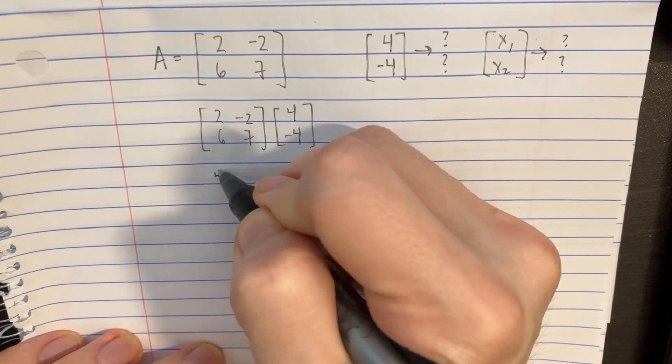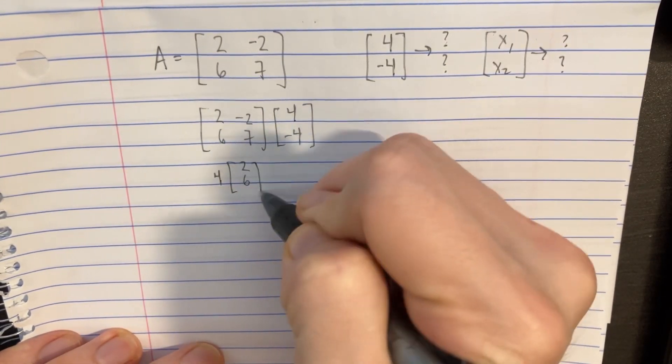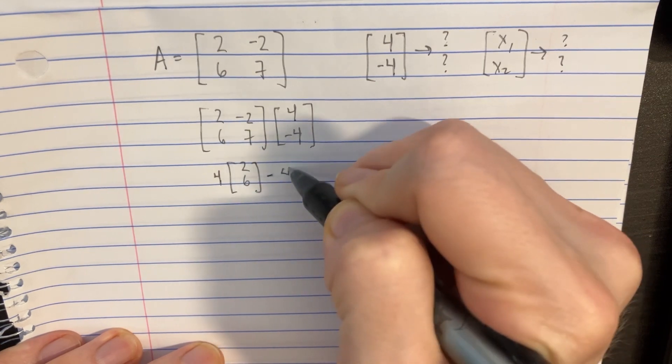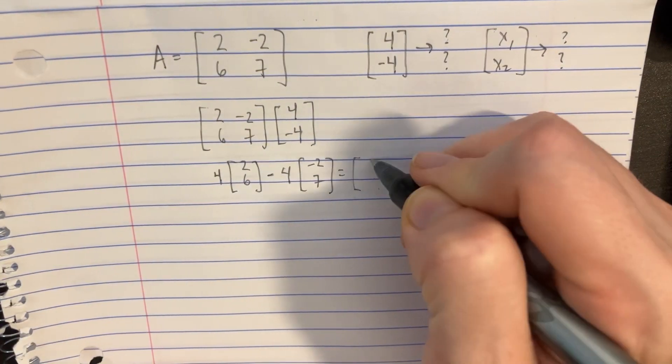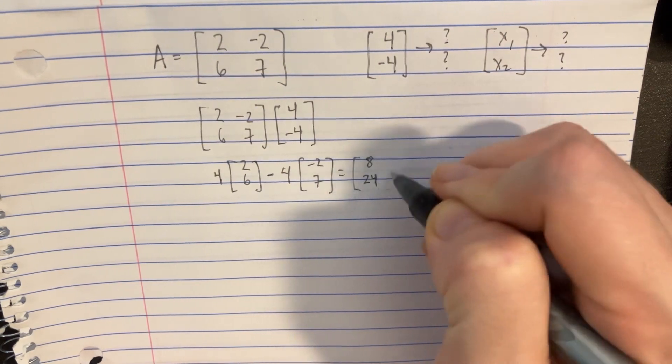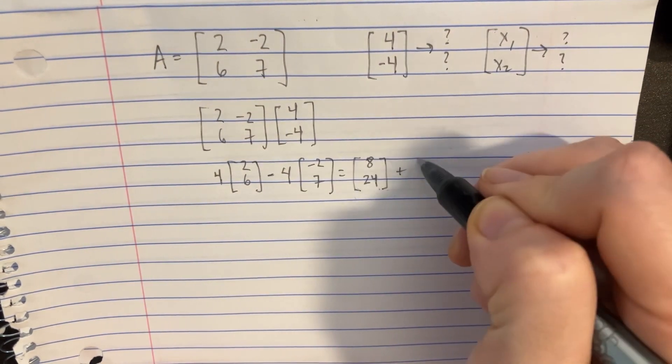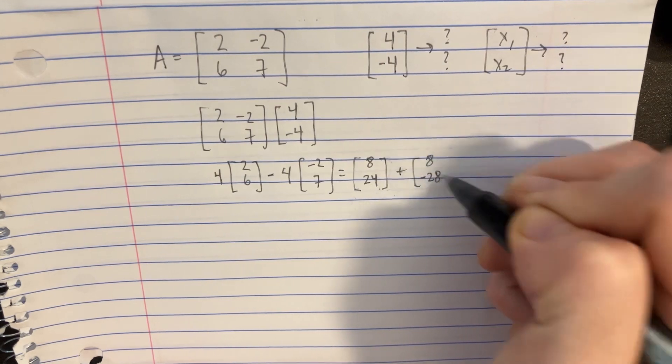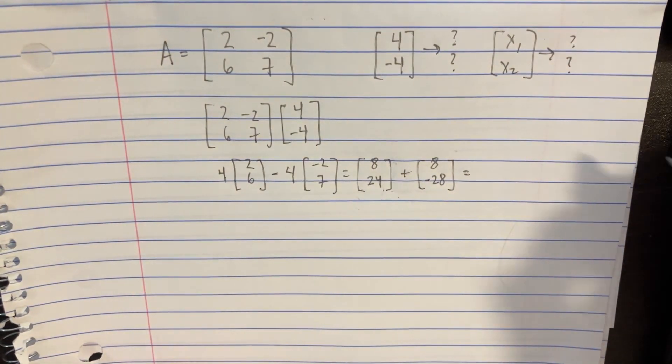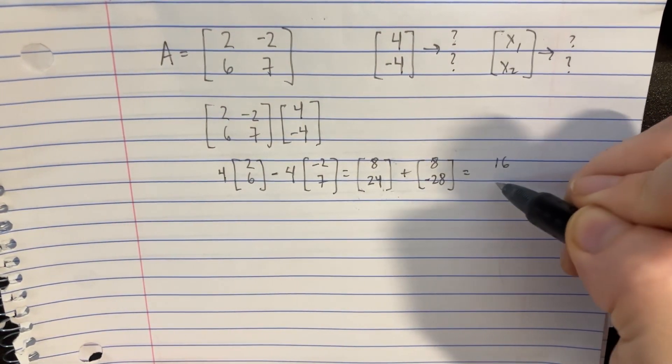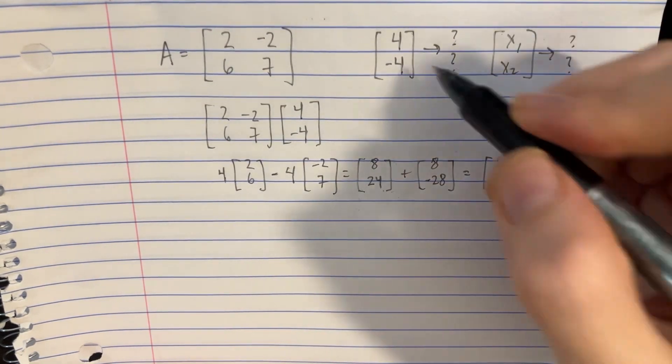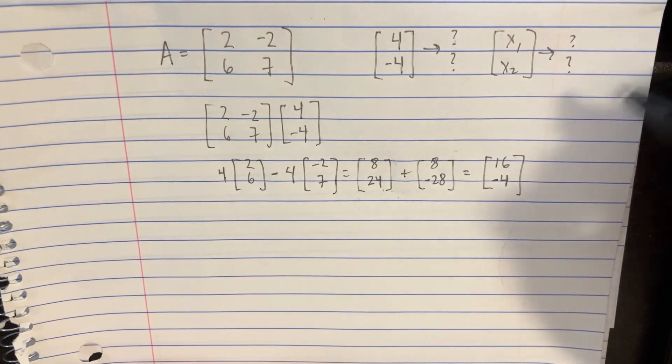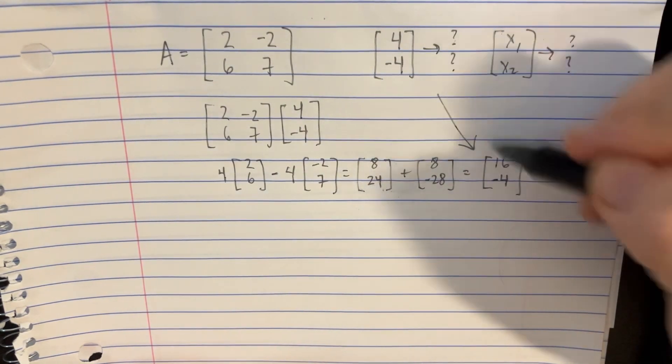And we can rewrite this by saying 4 times [2, 6], and then we would just say minus 4 times [negative 2, 7] here. So we would get 8 and then 24, and this one would be plus 8 up here, and then minus 28 down here. We could simplify that down and get 16, and then negative 4. And so that would be the image that we would get for this one right here.